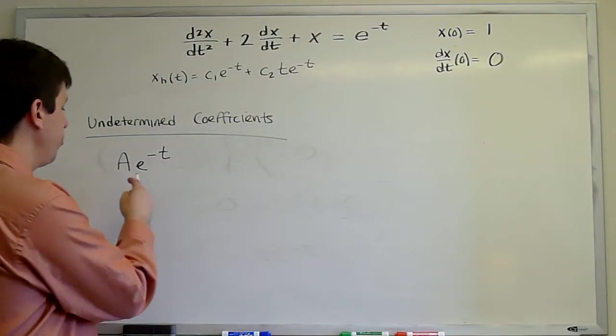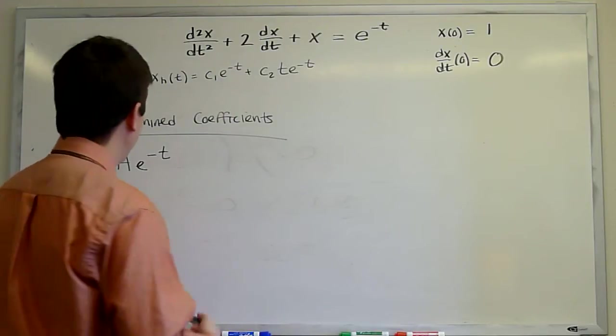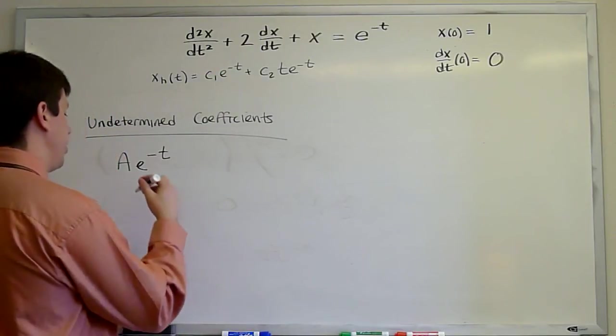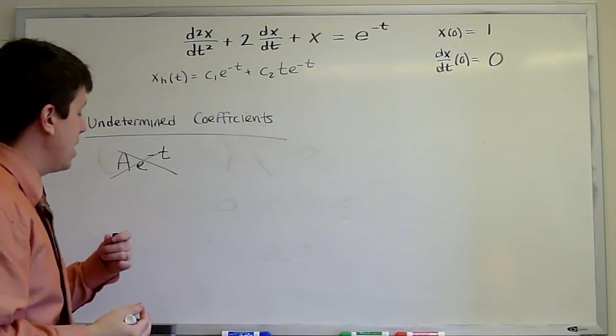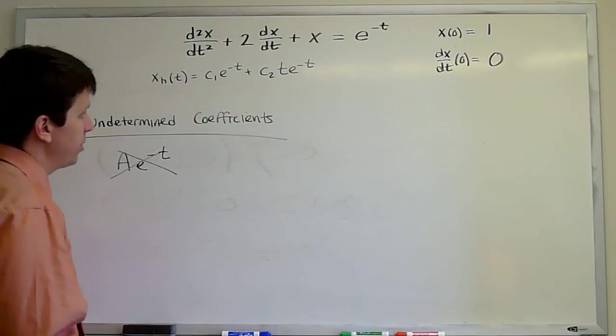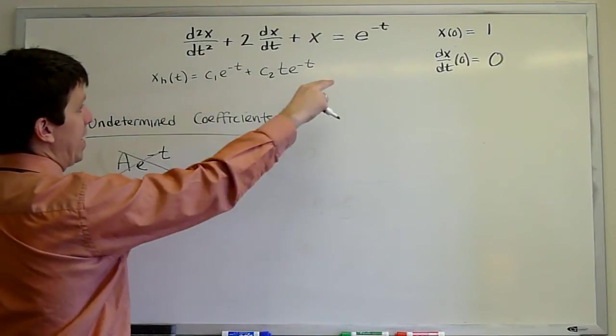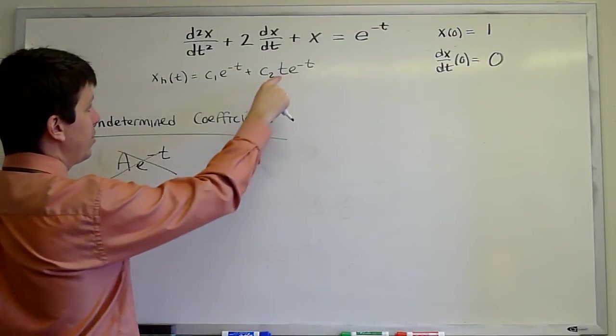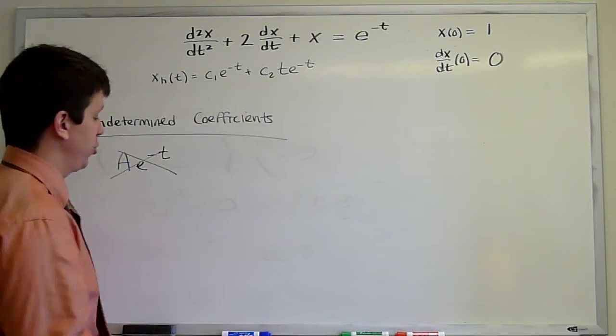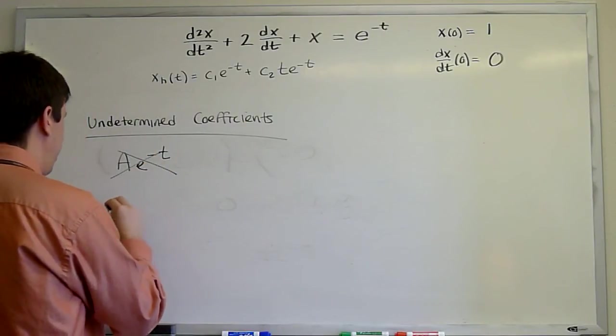What we need to do to this guess in order to make it a correct guess is multiply it by t to the power of 2 corresponding to the multiplicity of that root. If we had made a slightly less naive adjustment and said, well, I know it's something about multiply by t, you'd see that we would again fail because t e to the minus t is also a homogeneous solution. So that's not our guess, that's our naive guess, but then we need to multiply it by t squared.